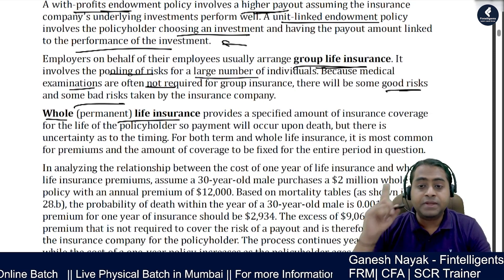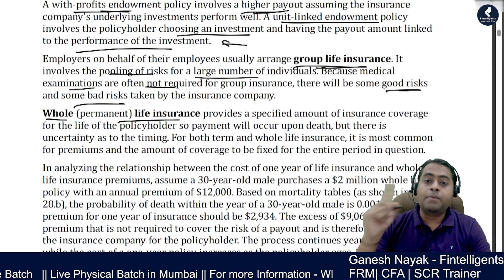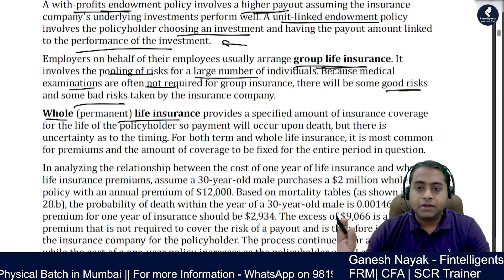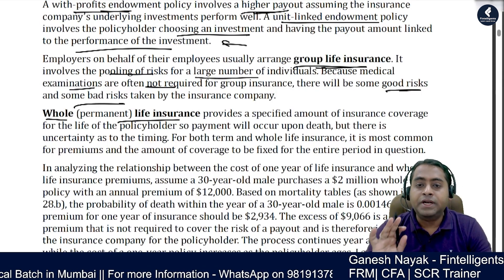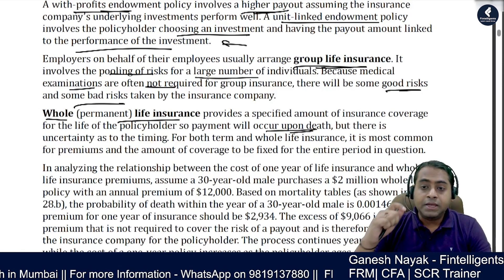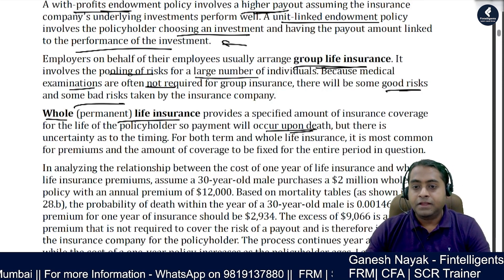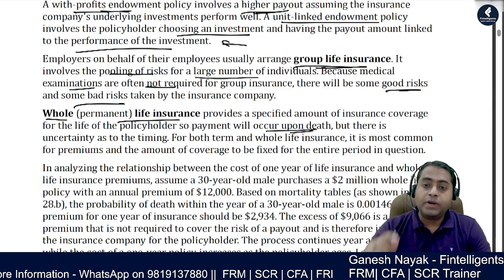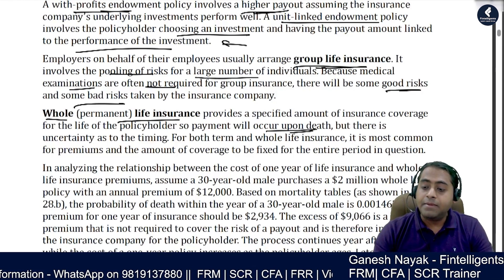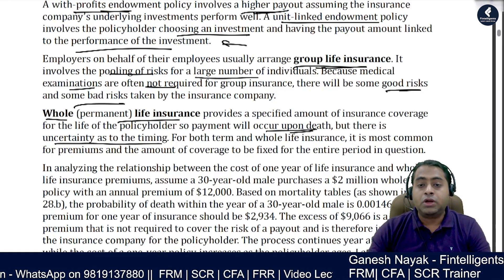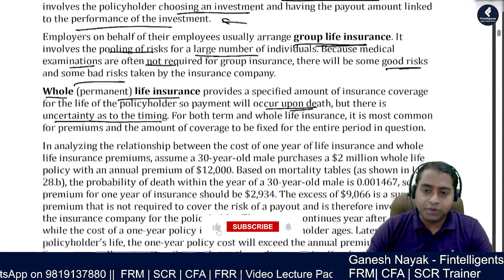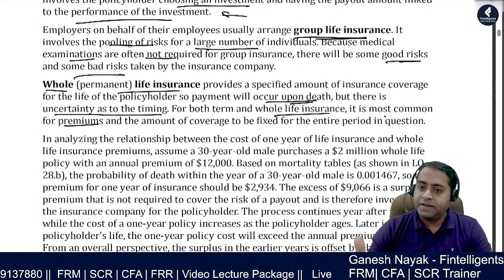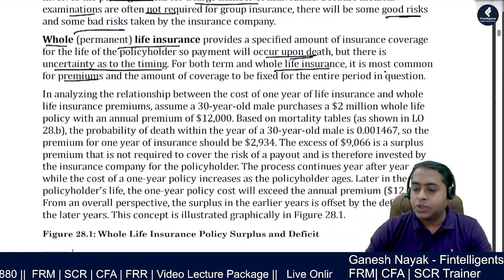Whole life insurance, also called permanent insurance, provides coverage until the end of the customer's life — it stops only upon death. The insurance company will keep paying the amount, but they are not sure when death will happen. They are sure the amount has to be paid, but the timing of payout is uncertain. The premium and coverage period dynamic is interesting — let's look at the diagram.